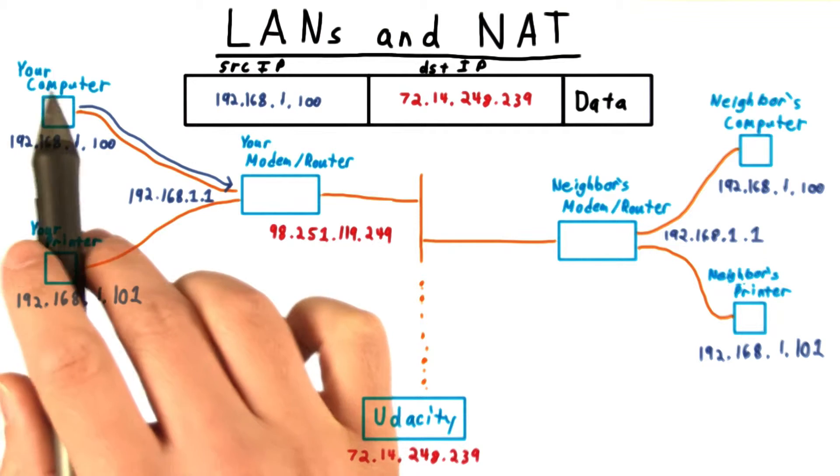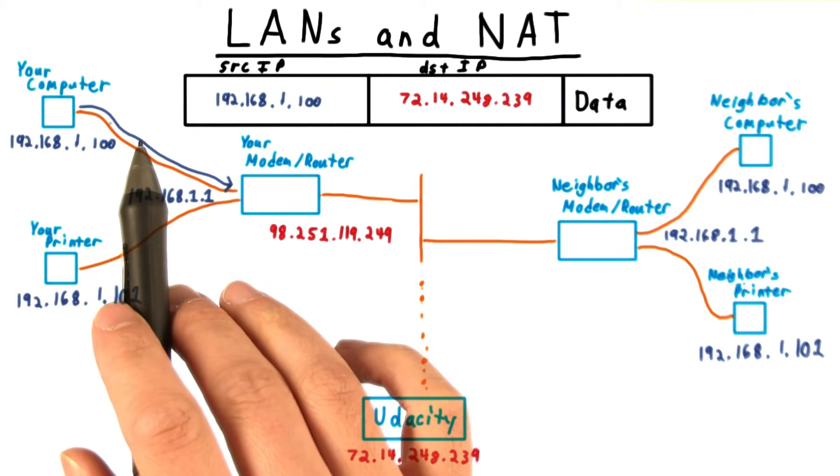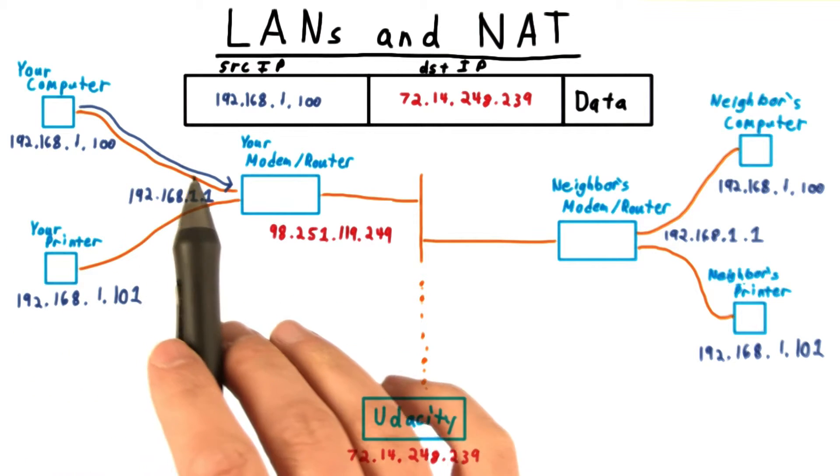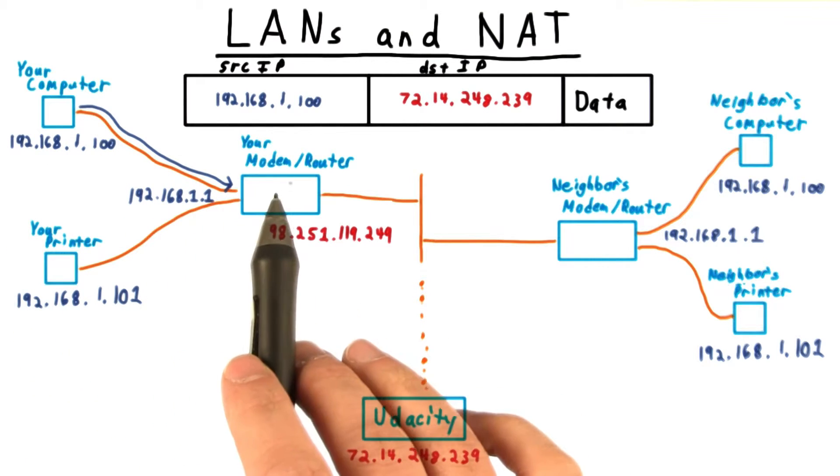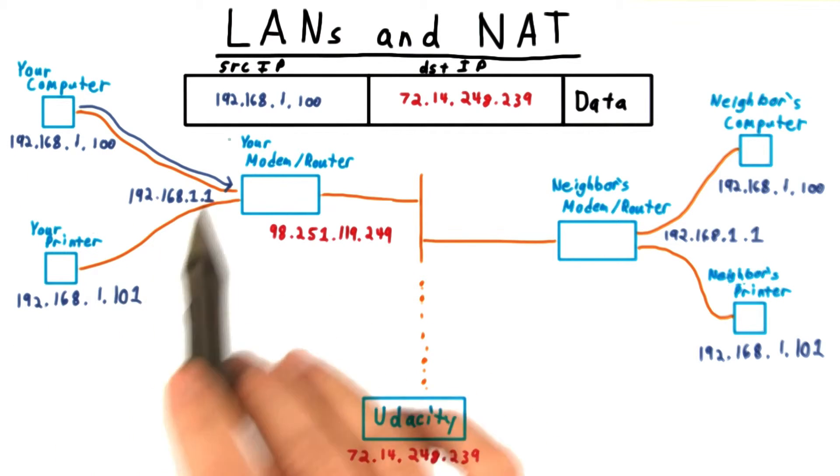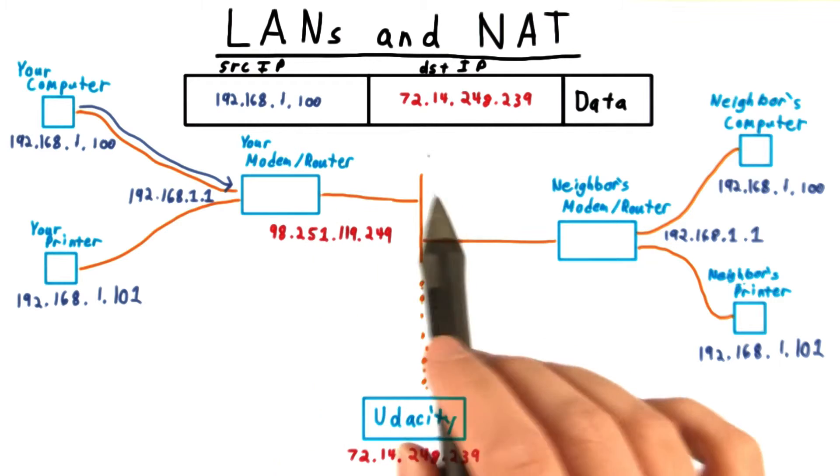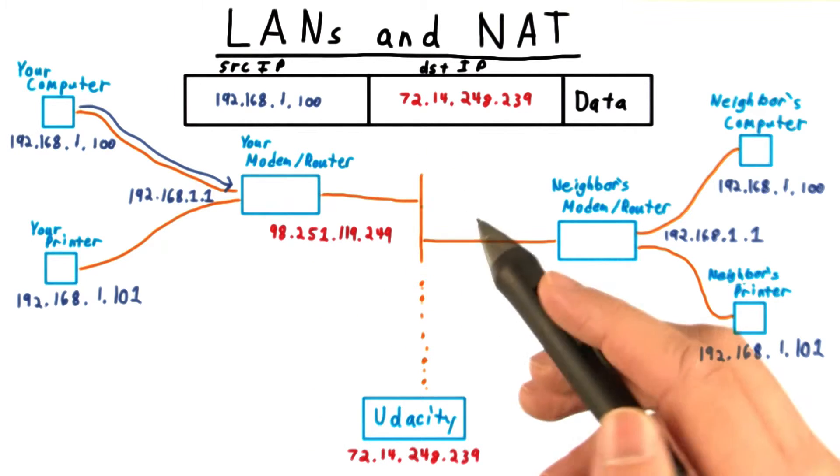When you ask your computer to send a packet to Udacity's IP, your computer will not find the matching IP in its routing table. So it will send the packet to the default gateway, in this case, your router. The router will also not find the IP in its table. It will really only know about the private IPs, and so it will forward the packet onto its default gateway on the wide area network, the internet.